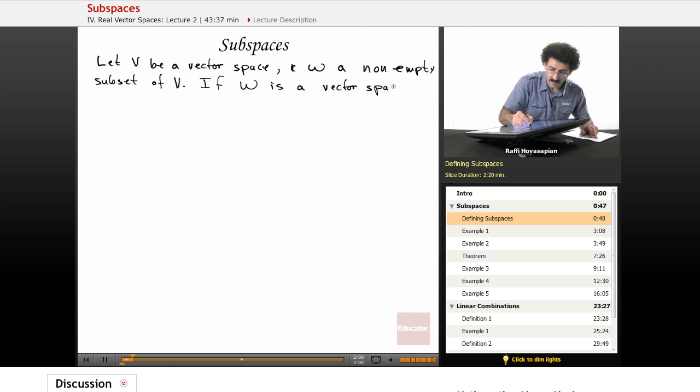If W is a vector space with respect to the same operations as V, then W is a subspace of V.